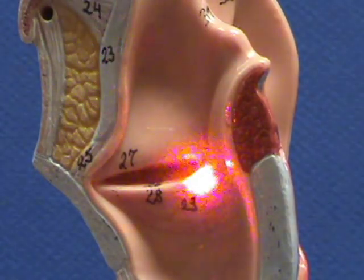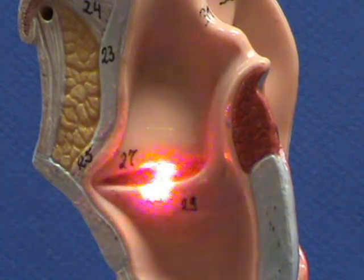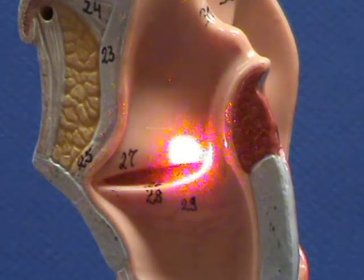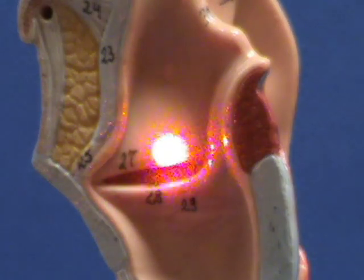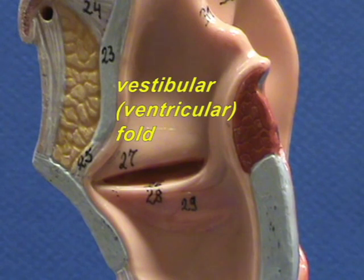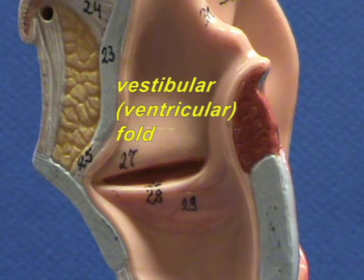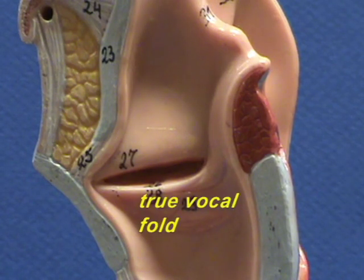There is a recess right above where you have the true vocal cords, and right over here there is another fold that's also supported by another ligament. This ligament is referred to as the vestibular ligament, so 27 would indicate the location of the vestibular fold. It is also called the ventricular fold. So 28 represents the true vocal cords, and 27 the false vocal cords.